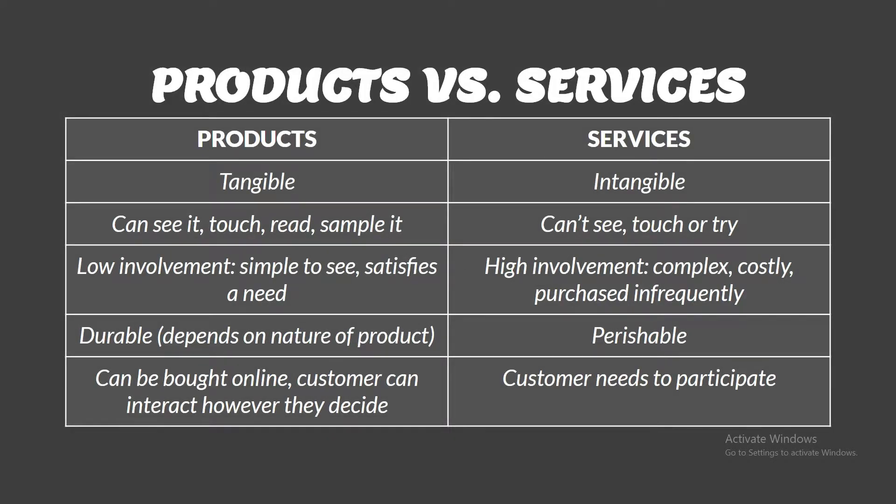If you are curious about the difference between a product and a service: a product is something tangible while a service is intangible. For example, a bottle of Coca-Cola has a size, you can touch it, you know its color. But Global Talent as a service has no size, you cannot touch it, and it has no color.